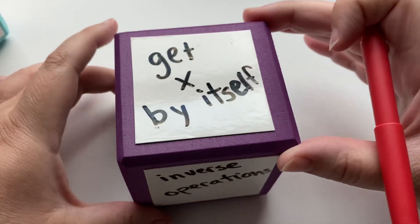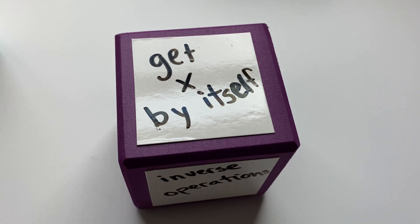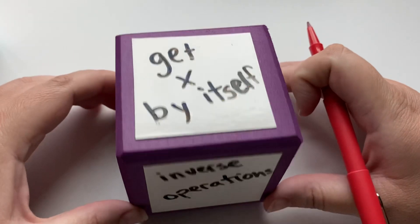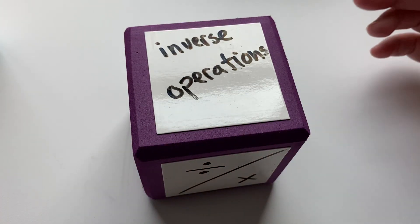When we're solving a multi-step equation, we're trying to get x by itself so that we can get x on one side and then the value of x on the other side. We do that by eliminating parts of the equation using the inverse operations.